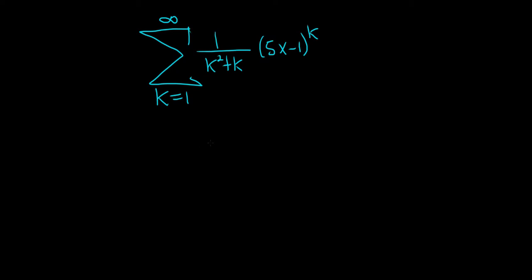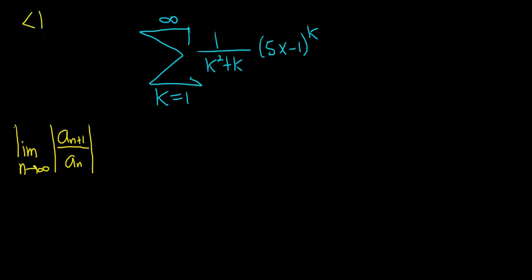In this problem we have to find the interval and radius of convergence of this power series. We'll do this by using the ratio test. The ratio test says that if you take the limit as n approaches infinity of the absolute value of a sub n plus 1 over a sub n, if the limit is less than 1, we'll have convergence.